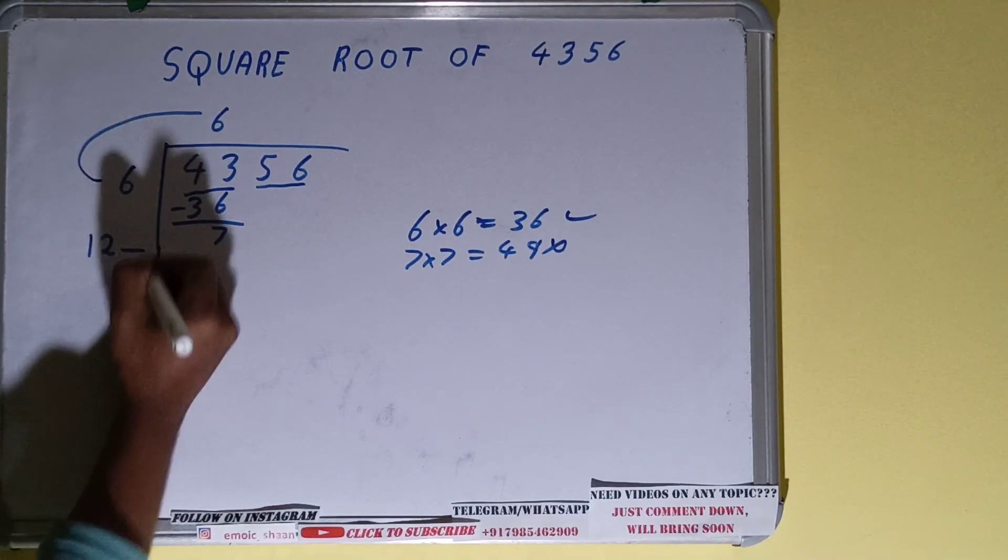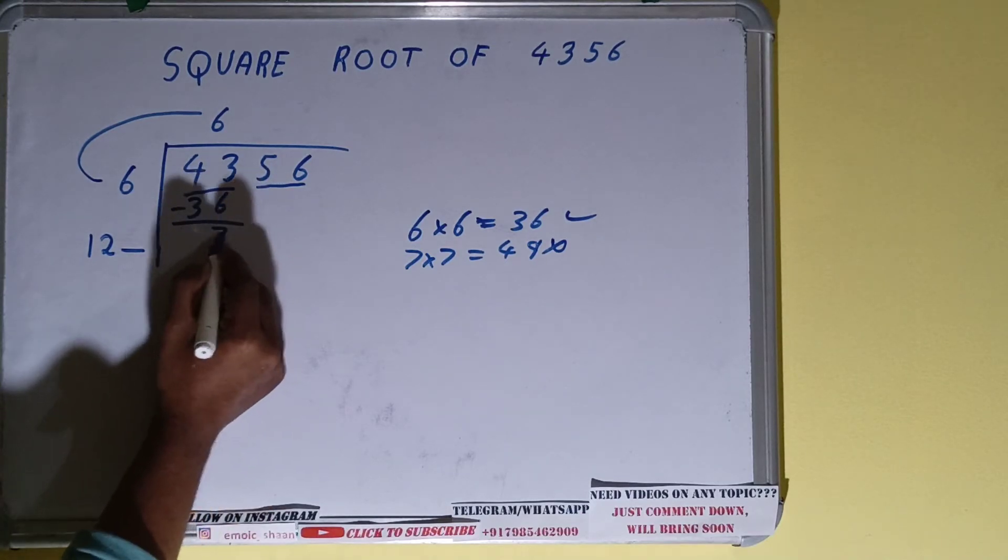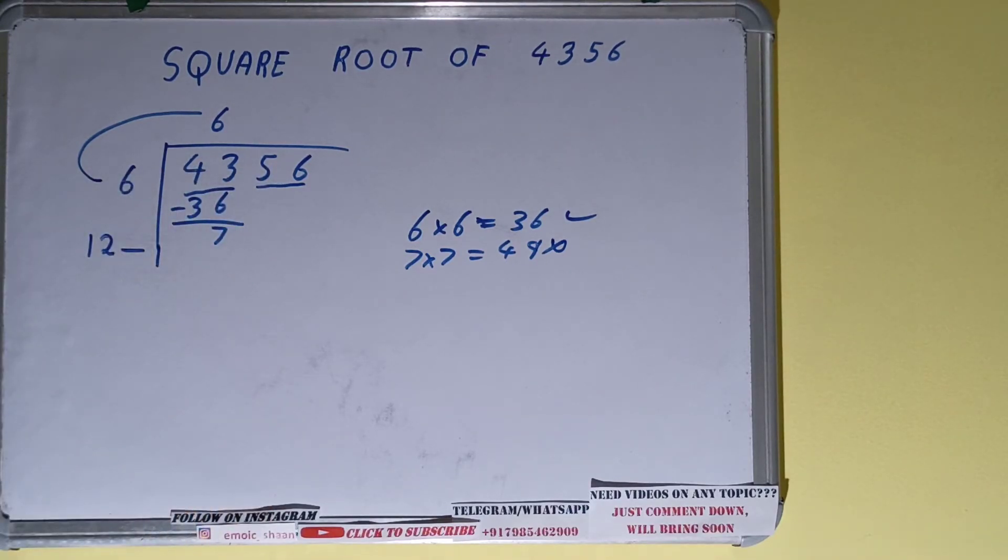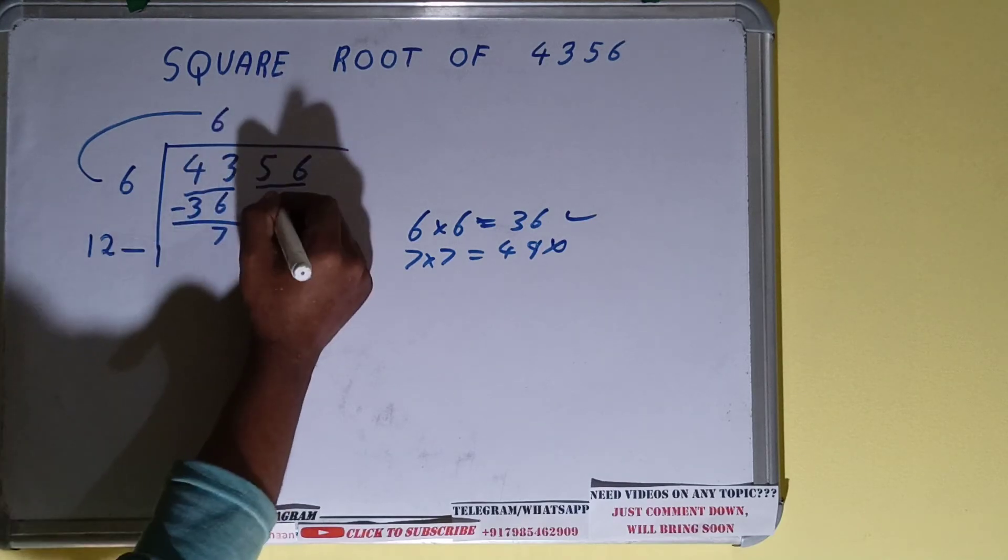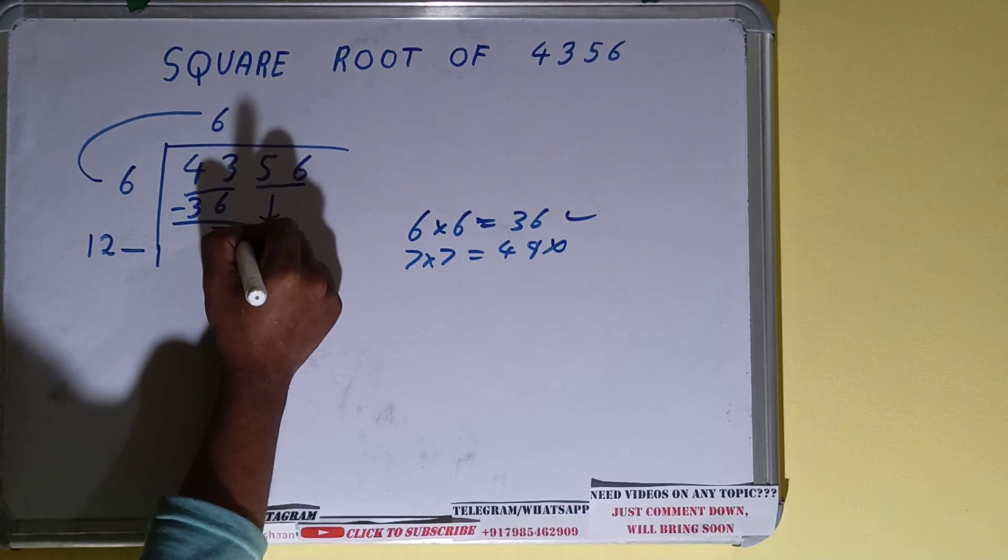Keep one digit extra. Okay, and now you can see this number 7 is smaller than this three-digit number, right? So bring more numbers down. But because we formed pairs, the whole 56 will come down. So it will be 756.